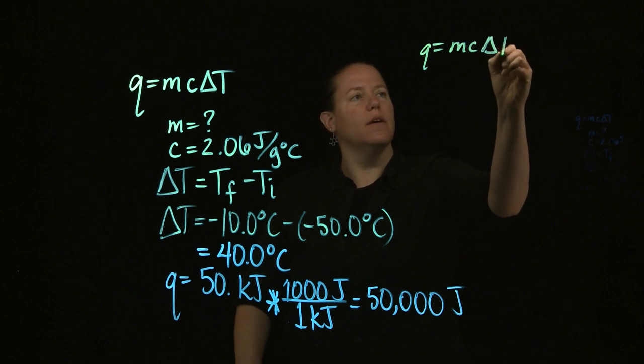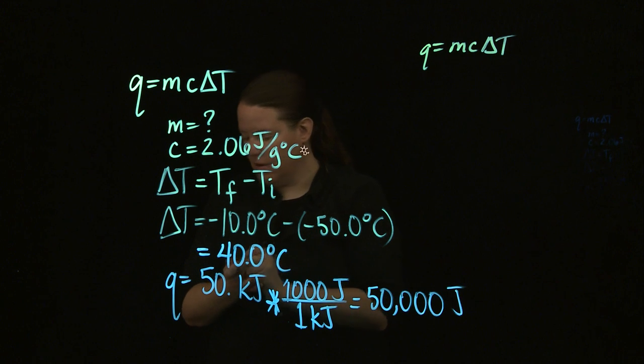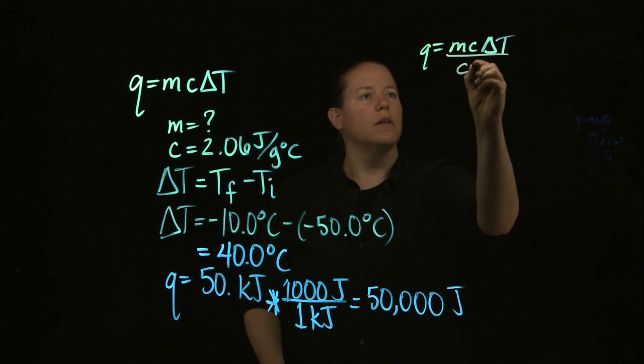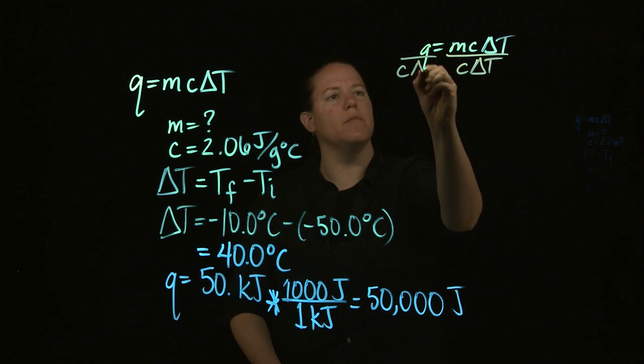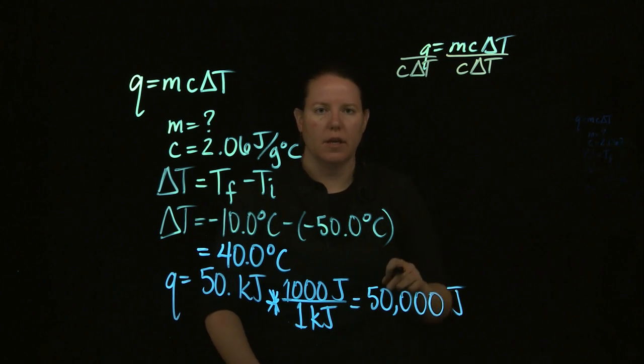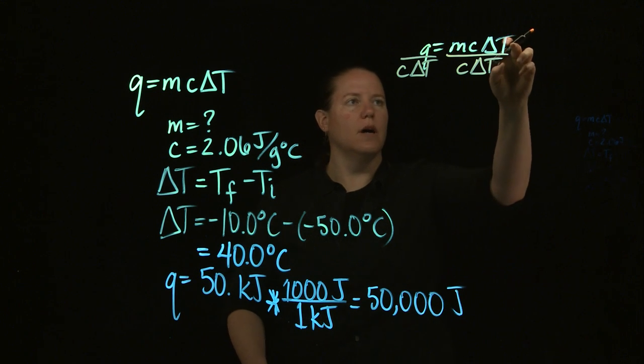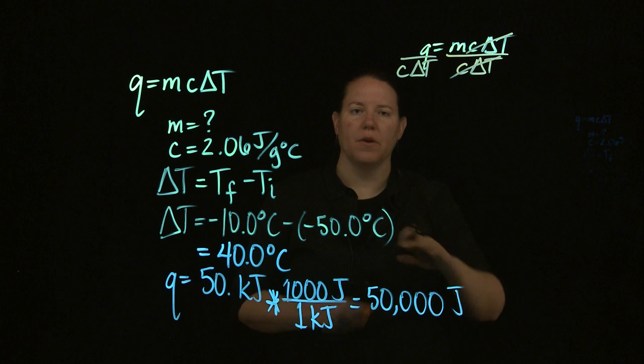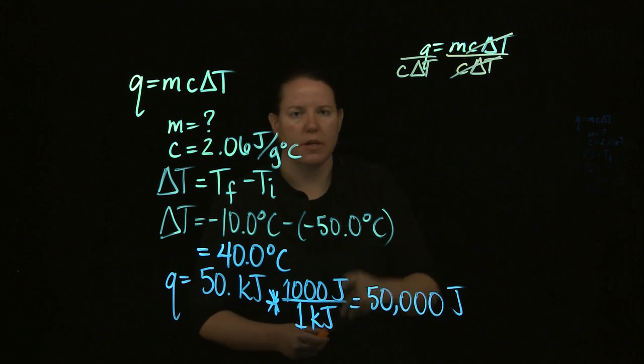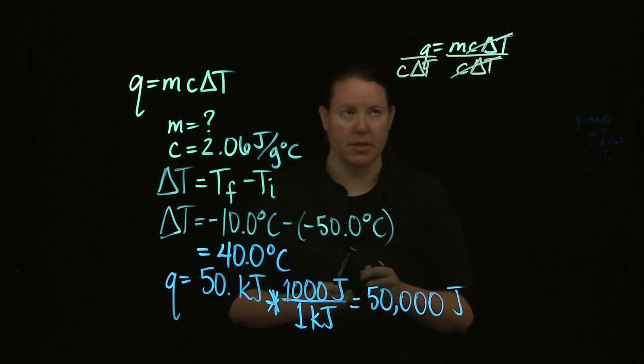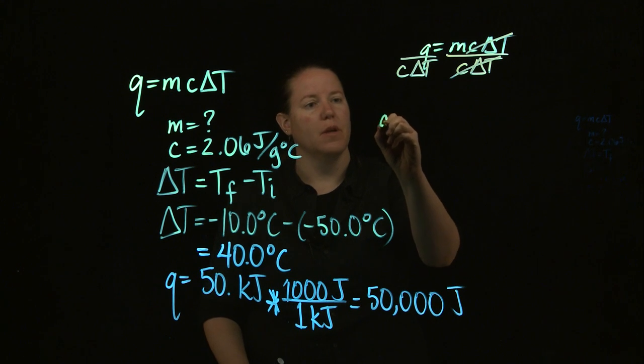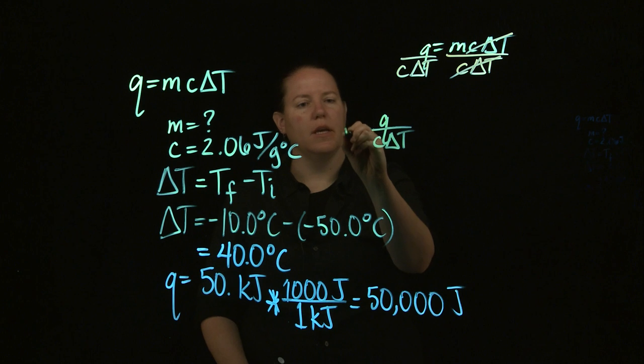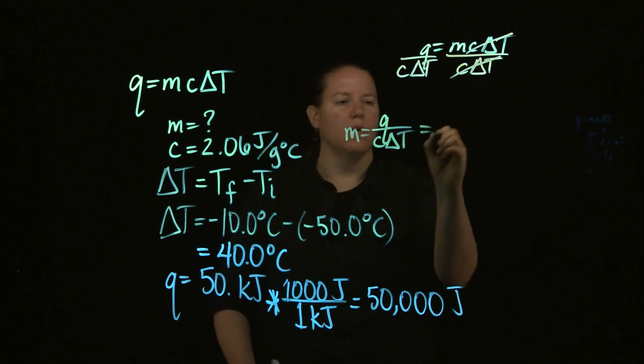Q equals mcΔT. If I divide both sides by c delta T, notice what happens. It's the same kind of thing that happens in dimensional analysis. I have the same variables on the top and the bottom. They cancel out. The only thing about algebra that's different is that whatever you do to one side, you must do to the opposite side because there's an equal sign there. So q over c delta T equals m.